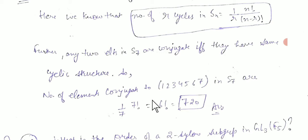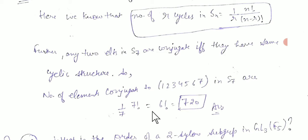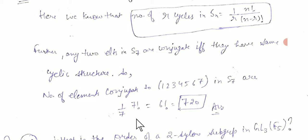So the number of elements conjugate to (1,2,3,4,5,6,7) in S7: we apply the formula with r=7. That gives (1/7) × 7!/(7−7)! = (1/7) × 7!/0! = 7!/7 = 6! = 720.